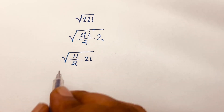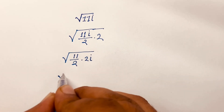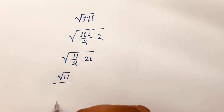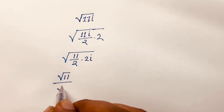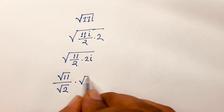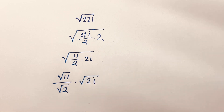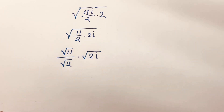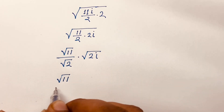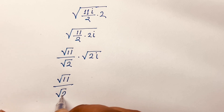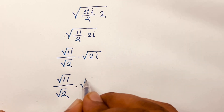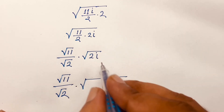Then I can say it will be square root of 11 over square root 2, times square root of 2i. So it becomes square root 11 over square root 2, times square root of 2i.